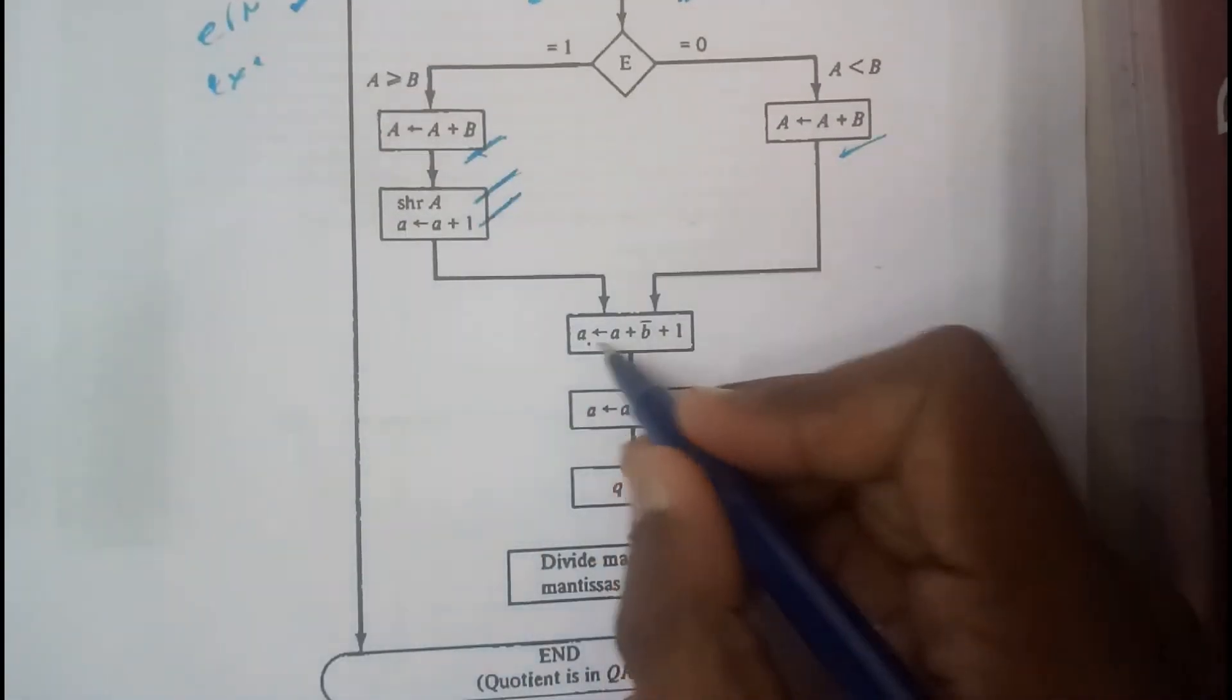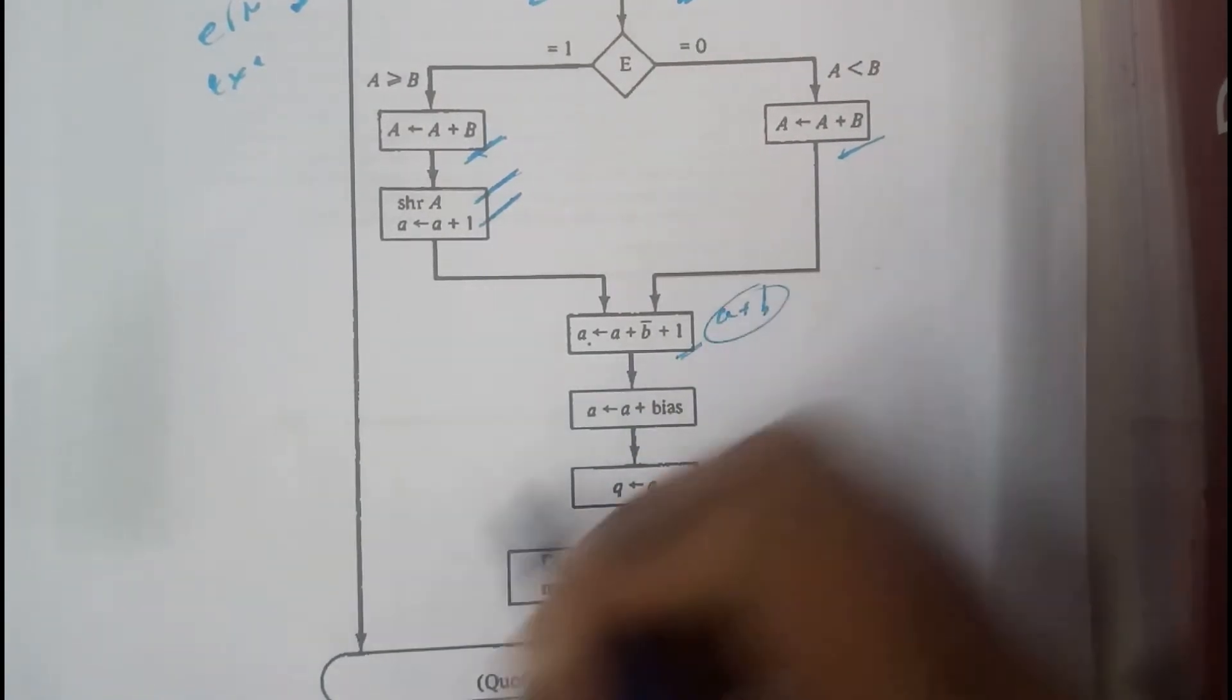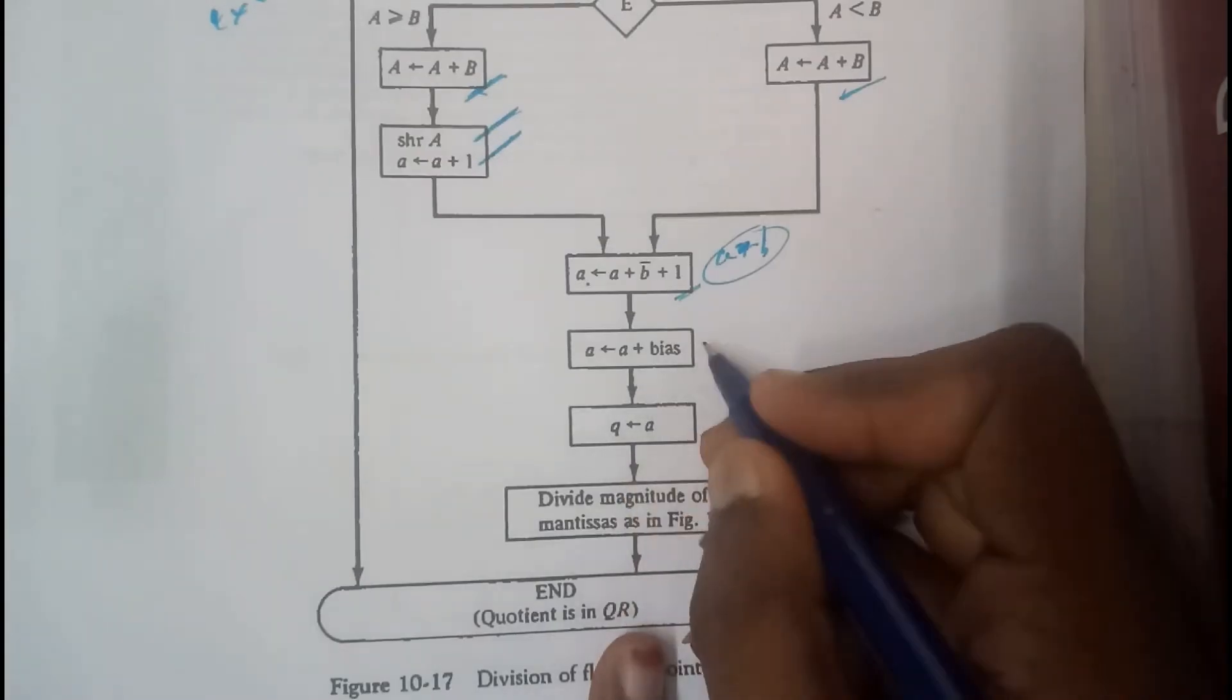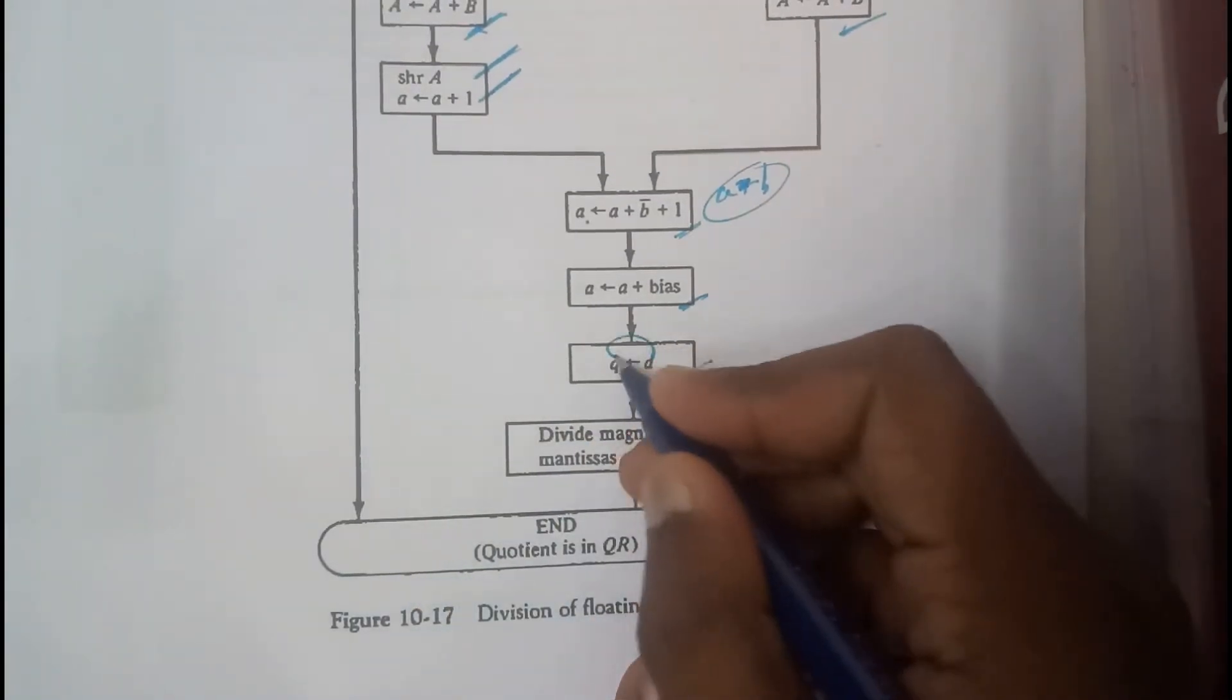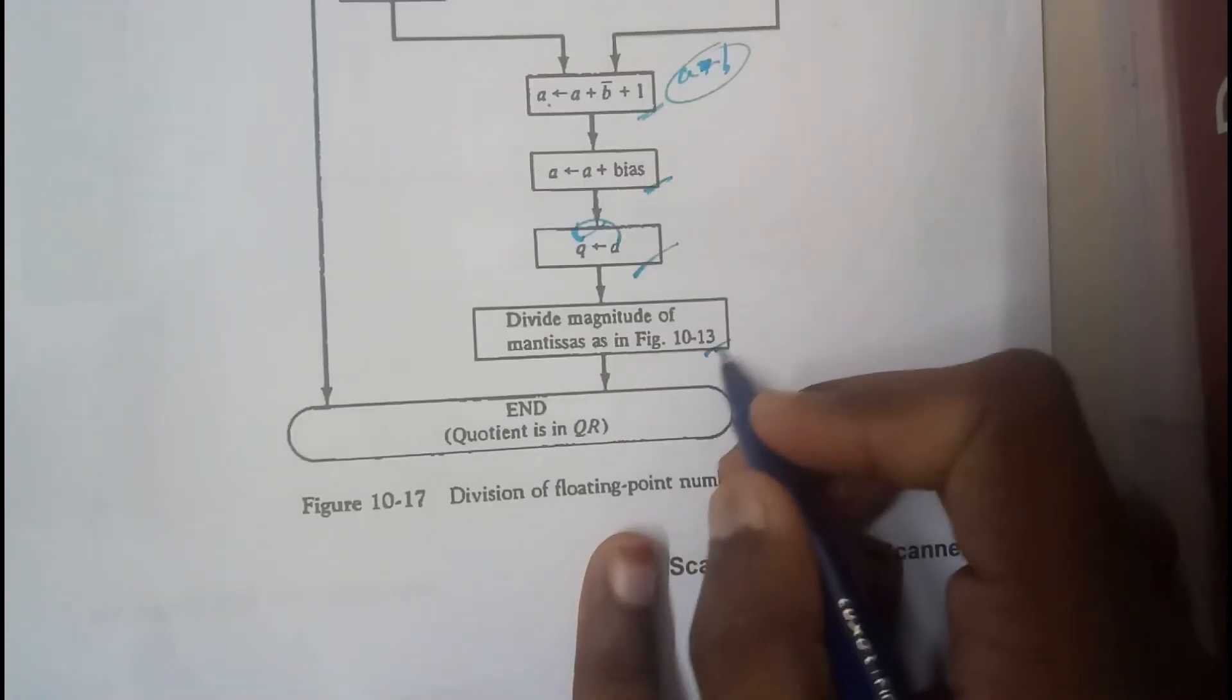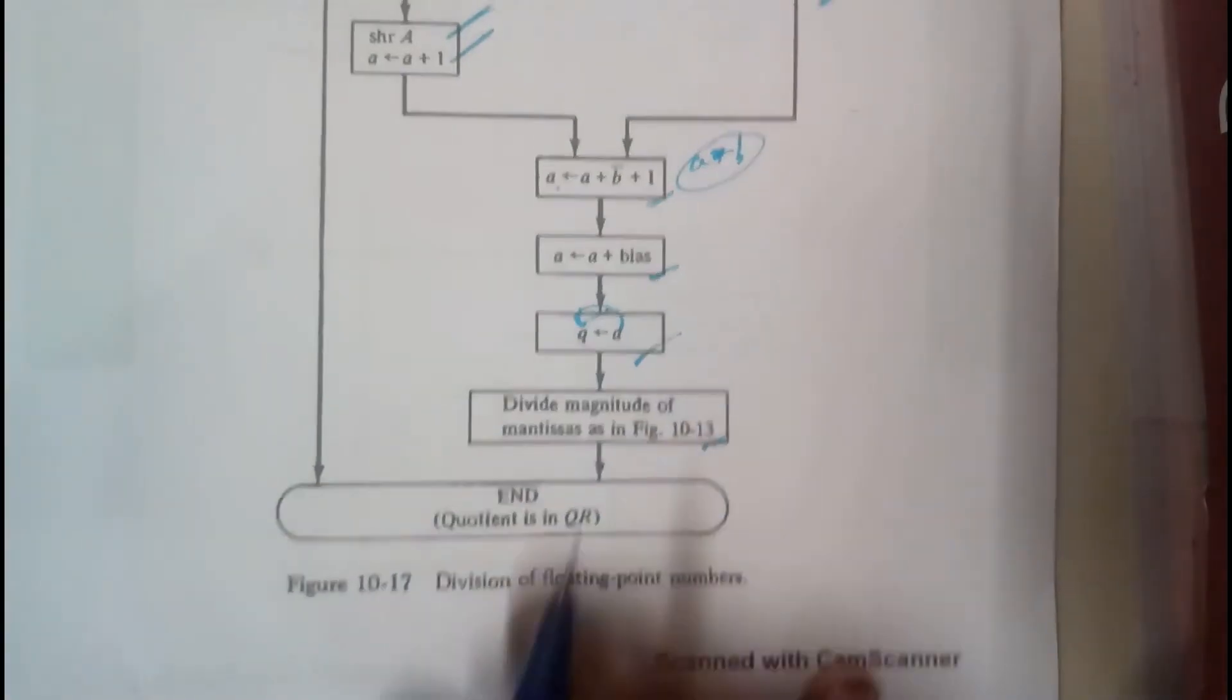We will take the A value and update it using A minus B. We will follow the bias rule and make the A value to be stored in Q. Then we will draw the same flowchart from the previous tutorial. That's how we complete the division for floating numbers.